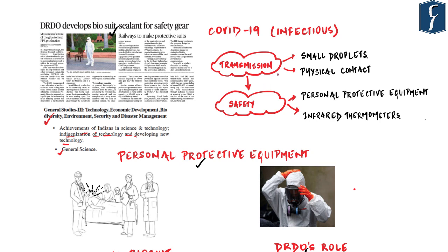COVID-19 has already infected more than a million people worldwide. It is mainly transmitted through small droplets from coughing and sneezing, and by touching infected surfaces. Common people can manage with social distancing and quarantine, but what about those who are actively dealing with COVID-19 patients daily — healthcare professionals, police personnel, and many others? This is where personal protective equipment and infrared thermometers come into play.